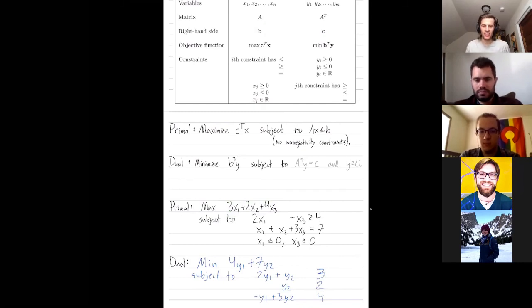And now the directions of these inequalities are coming from the variables of the primal. So my first primal variable was x1 is non-positive. So that means that my first constraint should be less than or equal to 3.